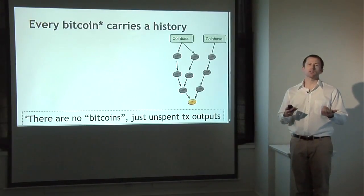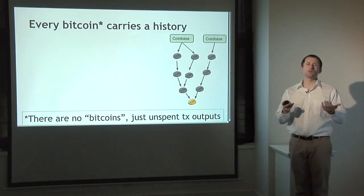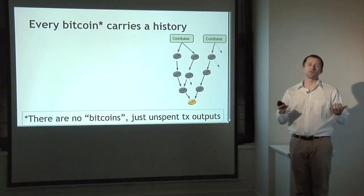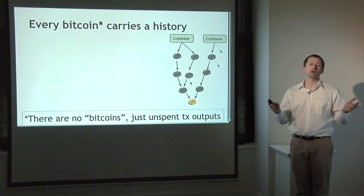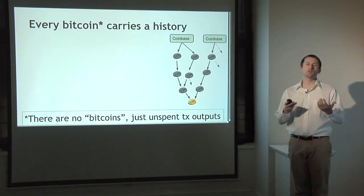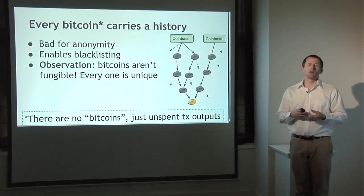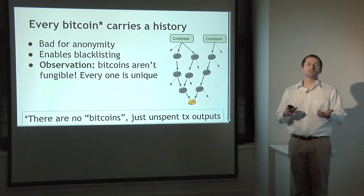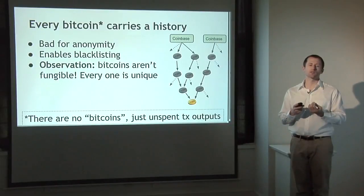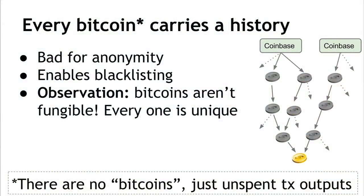For any Bitcoin, you can trace its history all the way back to some coinbase transaction when coins were originally minted. Every Bitcoin carries this history around with it. As we spent a whole lecture discussing, this is bad for anonymity because you can track ownership of coins, and it potentially enables blacklisting — if you want to blacklist coins owned by a specific person, you can do so using the fact that history is maintained as coins move around.